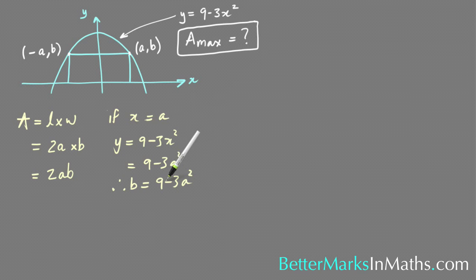You can substitute that into here, and then you're going to have only a in that formula. The area would be 2a times (9 minus 3a squared). Multiplying that out so you can more easily find the derivative, 2 times 9 is 18, so that's 18a, and then this times that gives you 6a cubed.